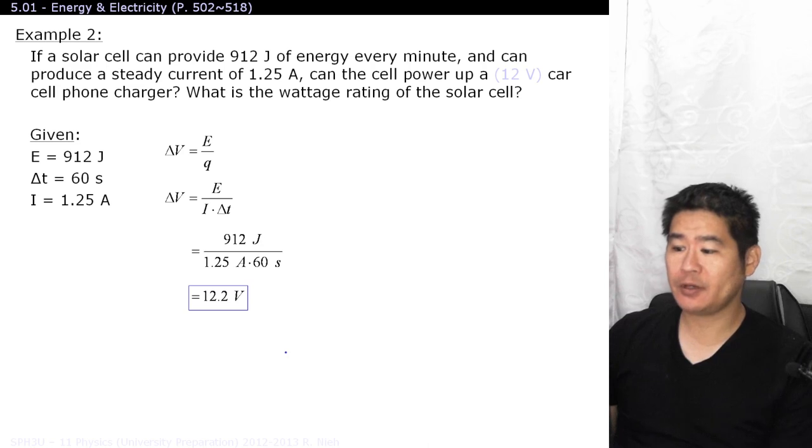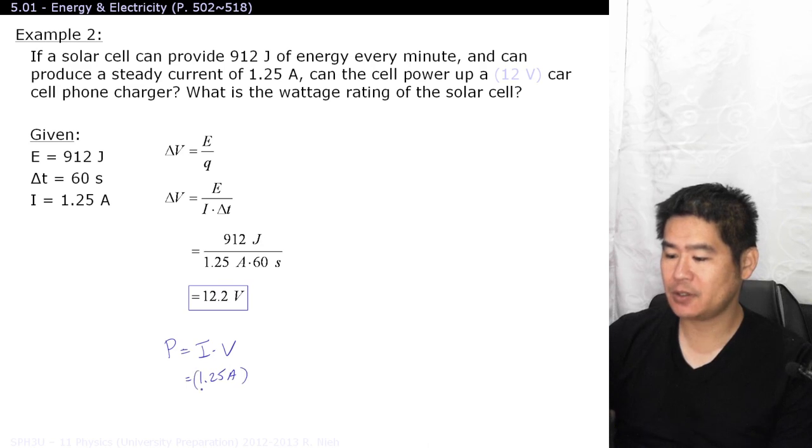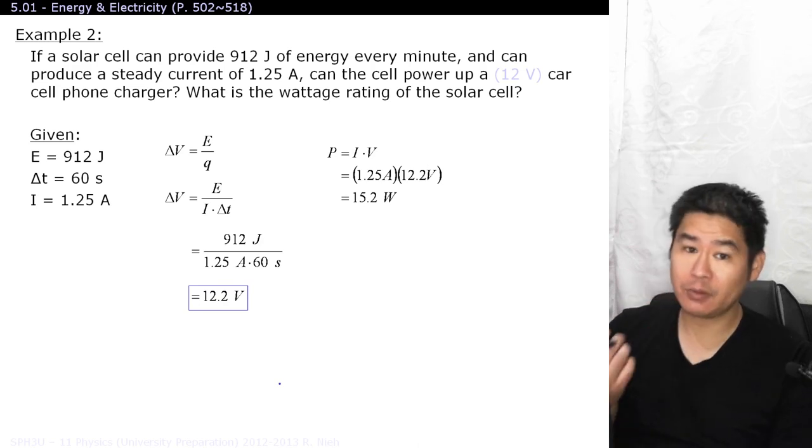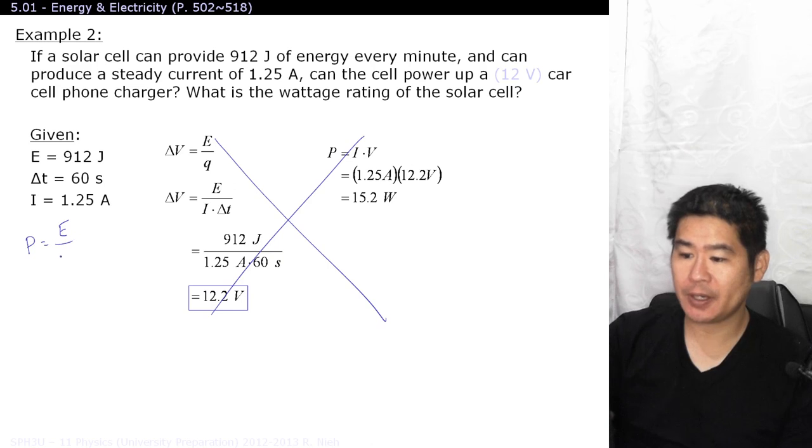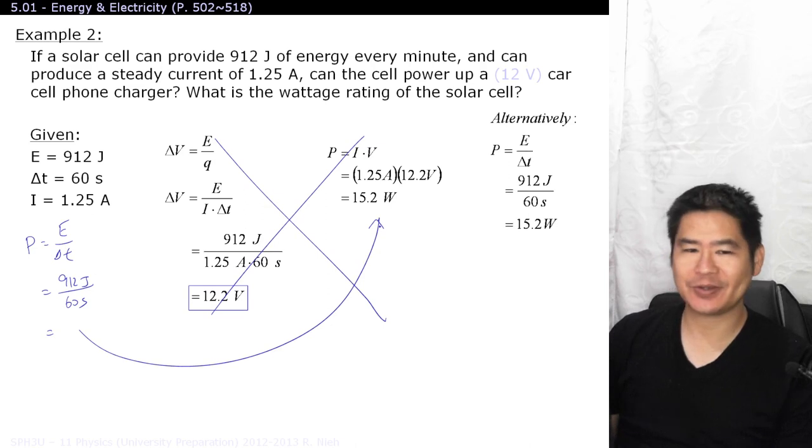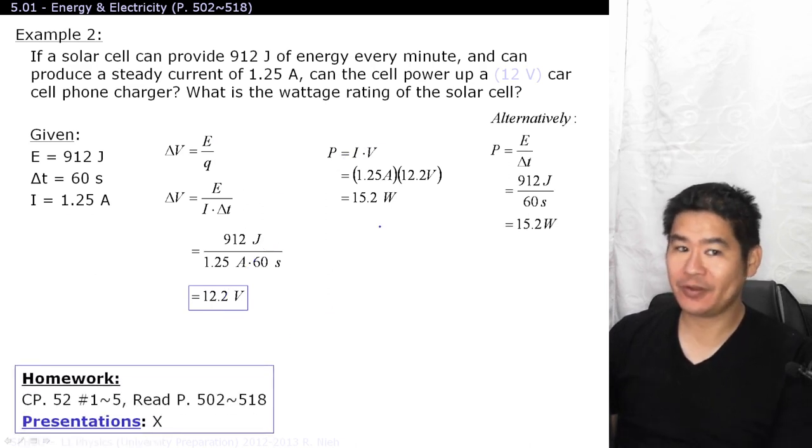What is the corresponding wattage rating of this? Well, we know that power is equal to current times voltage. So, with a current of 1.25 amperes multiplied by 12.2 volts, this will work out to, I believe, 15 watts. That's one way of answering it, but there's also another way which avoids us from doing all these calculations here. Remember that by definition, power is equal to the rate of energy usage, so that could also be calculated out by E over delta T, so 912 joules over 60 seconds. Go ahead and calculate that out, and you'll see that the answer there is exactly the same as the answer here. For more fun adventures like this, go through your homework, and I'll catch you in the next episode.